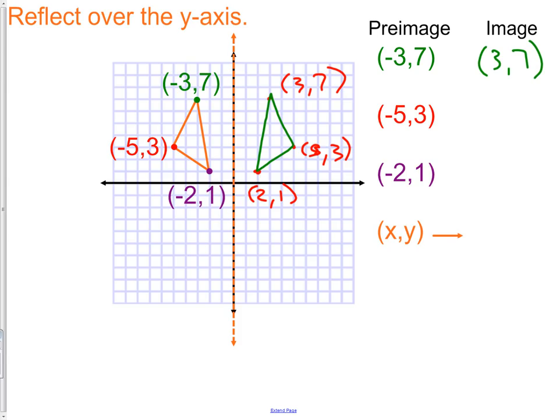Our pre-image of (-5, 3) has an image of (5, 3). And our pre-image of (-2, 1) has an image of (2, 1). If you look at these, you're going to be able to see there's a real simple correlation that's going on here. And that is, when we flip over the y-axis, we simply are changing the sign on the x-coordinate. We write this as (-x, y).